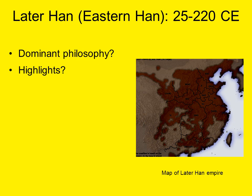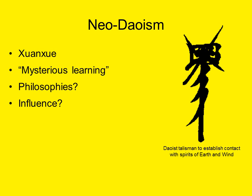The Later Han dynasty is also noted for the emergence of a philosophical tradition that we today refer to as Neo-Daoism. The Chinese referred to this philosophical belief system as Xuanxue, X-U-A-N-X-U-E, which translates roughly as 'mysterious learning.' We can view this in part as a reaction against traditional Confucianism, though in practice Neo-Daoism is something of a blending of Taoist and Confucian beliefs.